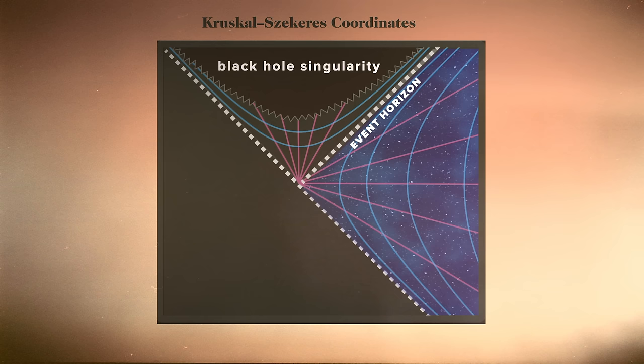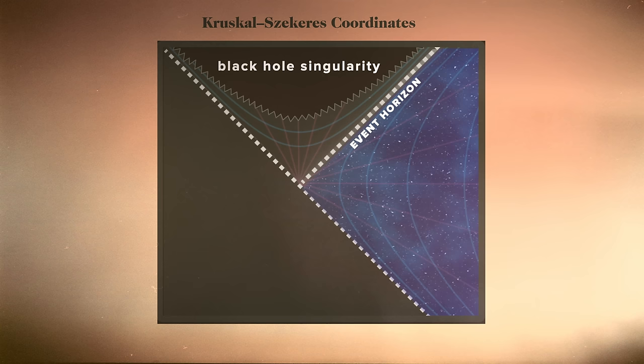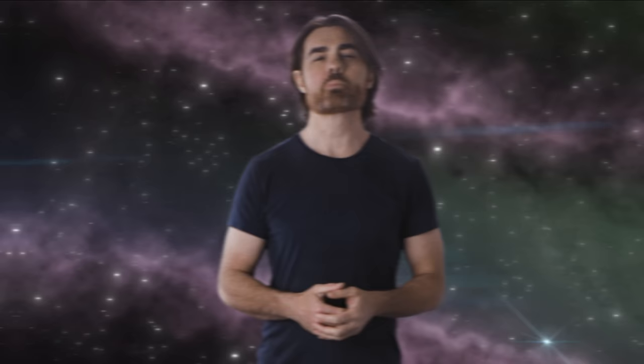Kruskal-Szekeres coordinates improved our map by enforcing that the trajectory of light always be at a 45-degree angle. In the resulting Kruskal-Szekeres diagram, the event horizon is also a 45-degree line, even though it actually has a constant physical size. Because nothing can travel faster than light, this makes it very clear what parts of the universe are accessible. Close to the event horizon, even a light-speed path has only a narrow window of escape. And once inside the event horizon, no such window remains.